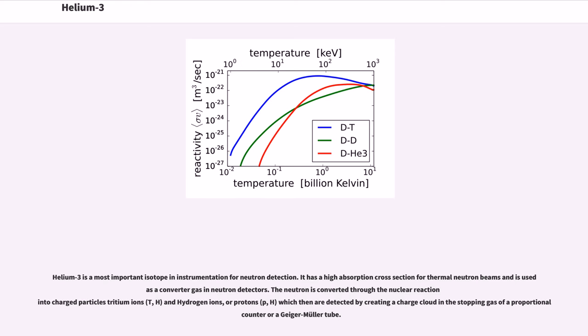Helium-3 is the most important isotope in instrumentation for neutron detection. It has a high absorption cross-section for thermal neutron beams and is used as a converter gas in neutron detectors. The neutron is converted through the nuclear reaction into charged particles tritium ions and hydrogen ions, or protons, which then are detected by creating a charged cloud in the stopping gas of a proportional counter or a Geiger-Müller tube.